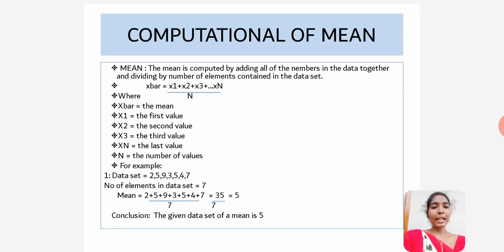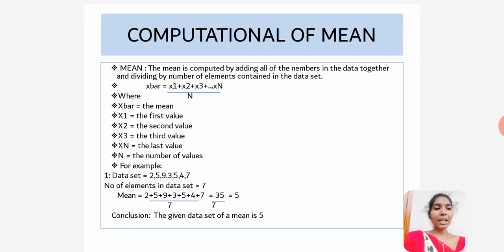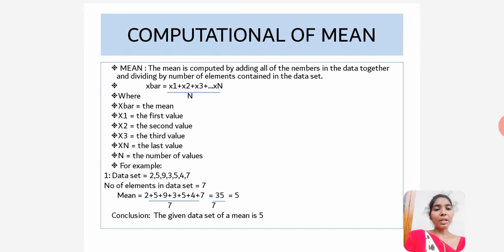For example, the dataset is: 2, 5, 9, 3, 5, 4, 7. There are 7 elements in this dataset. So the mean is equal to 2 plus 5 plus 9 plus 3 plus 5 plus 4 plus 7, divided by 7. The sum is 35, divided by 7. The answer is 5.